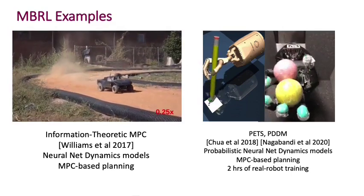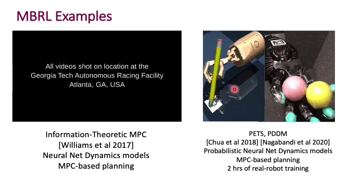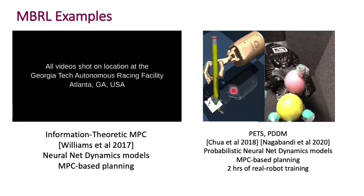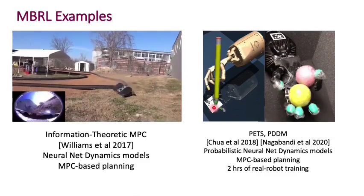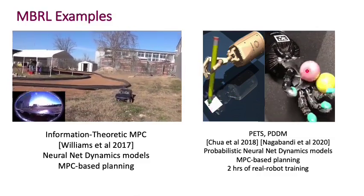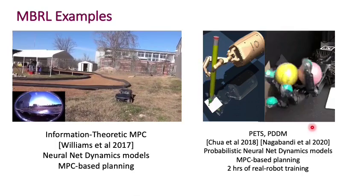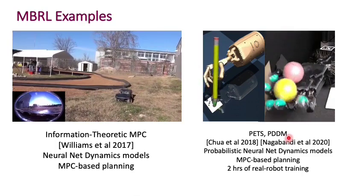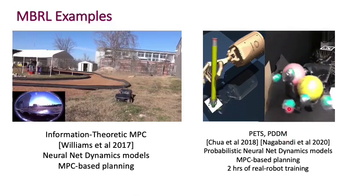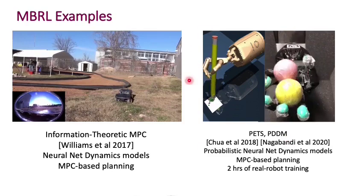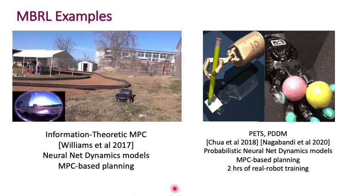On the right, you see some examples of manipulation tasks being learned with model-based reinforcement learning — a simulated task of writing with a pencil, and juggling two balls in a robotic hand. These are quite difficult tasks. Manipulation with such contact-rich events tends to be really difficult, so it's quite impressive that it's able to learn within two hours of real robot training.